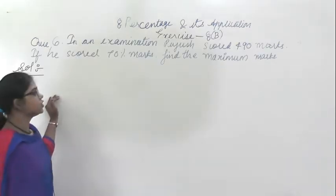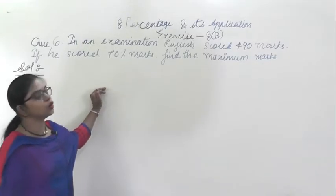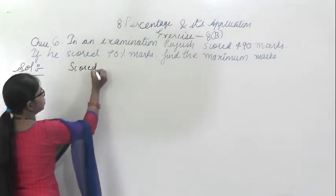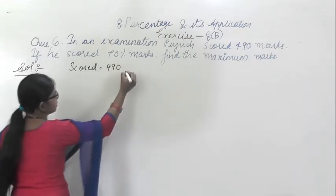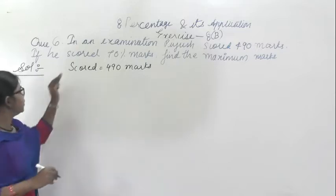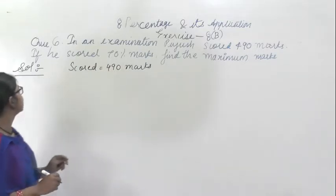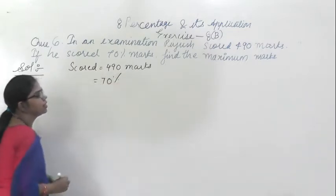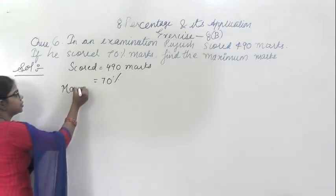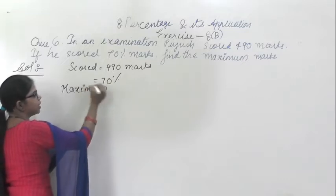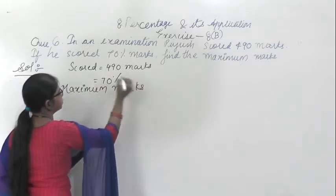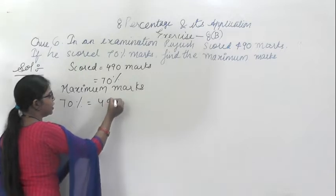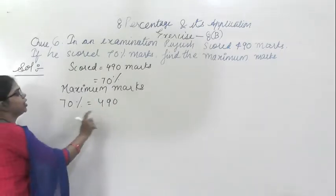This is question number 6. In an examination, Pugh scored 490 marks. He scored 70% marks. We have to find the maximum marks. So 70% corresponds to 490 marks.